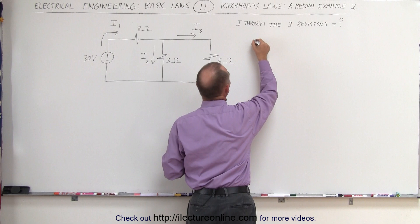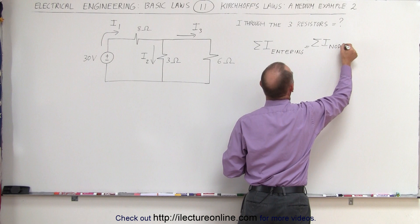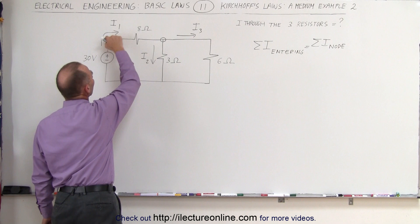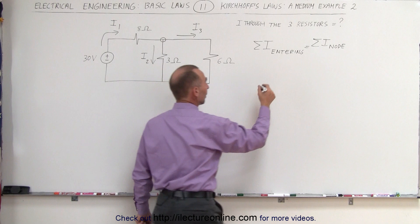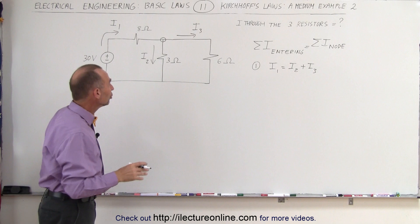The first law of Kirchhoff states that we can add up all the currents entering a node, and that must equal all the currents leaving that node. If we use that law and take a look at this node right here, we can see that we have I1 entering that node and I2 and I3 leaving that node. So our first equation is that I1 must equal I2 plus I3. That's equation number 1.